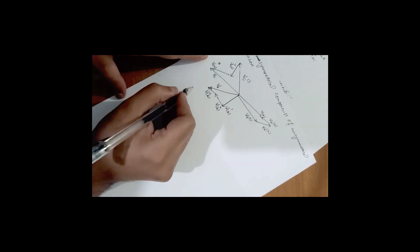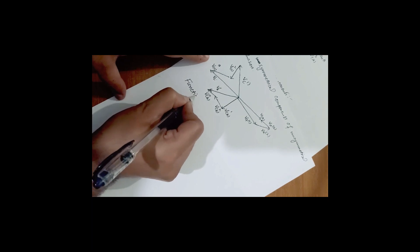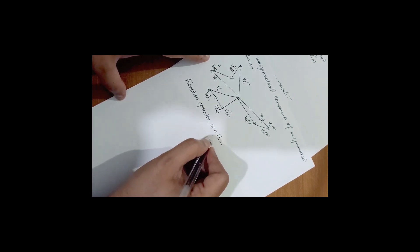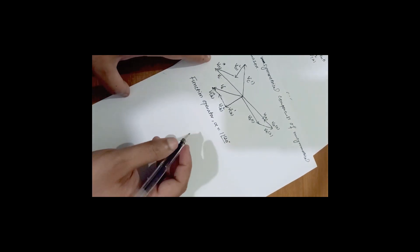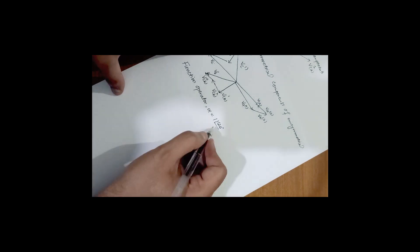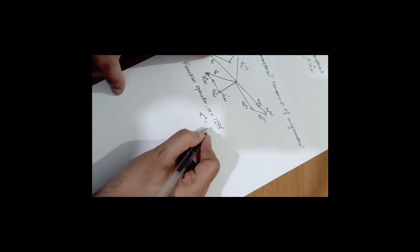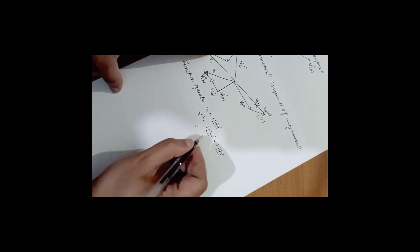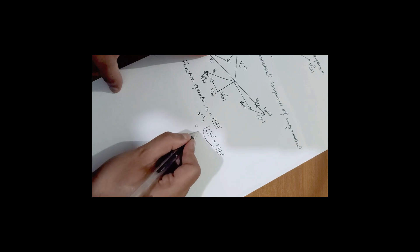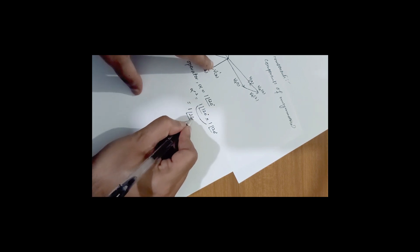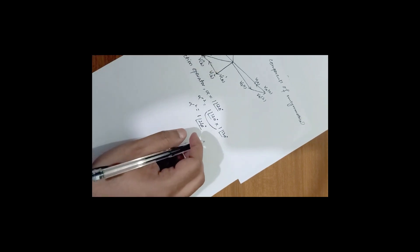In order to describe the phasors mathematically, we introduce a function operator alpha, where alpha has magnitude 1 and phase angle 120 degrees. Then alpha squared equals 1∠240 degrees, since multiplying 1∠120° by 1∠120° gives magnitude 1 and angle 240 degrees.